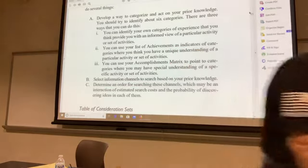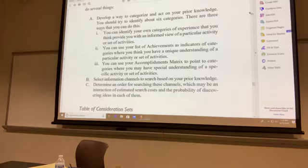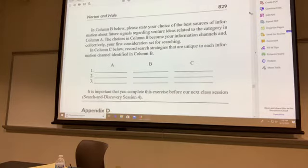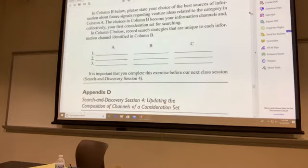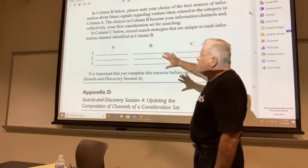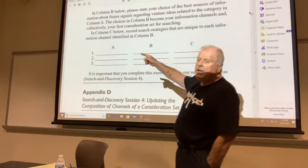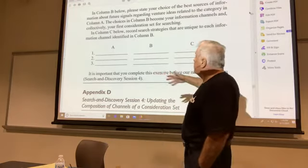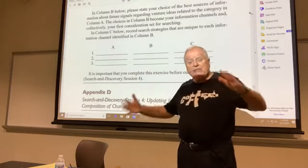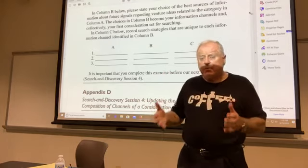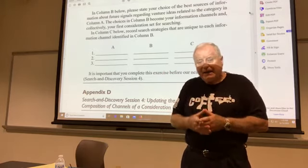If you look at this very simple matrix, there are three columns and three rows. Column A would be the knowledge domains. Column B would be the information channels for each one of them. Column C would be the additive collection of information channels about a domain. This is meant to jumpstart you. It's a pretty straightforward approach — and indeed, that's why it's called the systematic search theory.